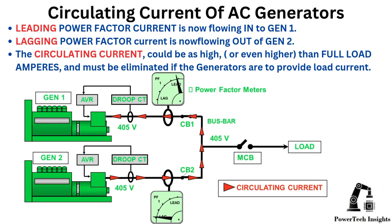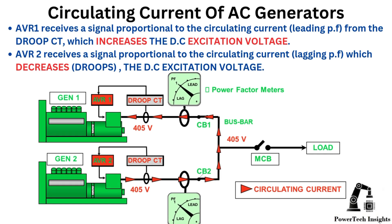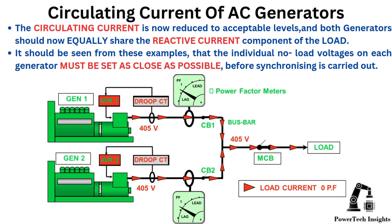Leading power factor current is now flowing into Gen 1; lagging power factor current is now flowing out of Gen 2. The circulating current could be as high or even higher than full-load amperes and must be eliminated if the generators are to provide load current. AVR-1 receives a signal proportional to the circulating current (leading power factor) from the droop CT, which increases the DC excitation voltage. AVR-2 receives a signal proportional to the circulating current (lagging power factor), which decreases (droops) the DC excitation voltage. The circulating current is now reduced to acceptable levels, and both generators should equally share the reactive current component of the load. The individual no-load voltages on each generator must be set as close as possible before synchronizing is carried out.